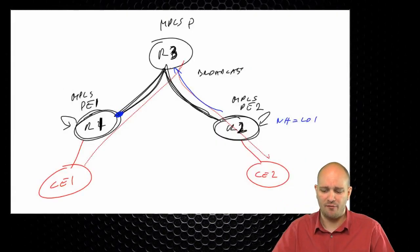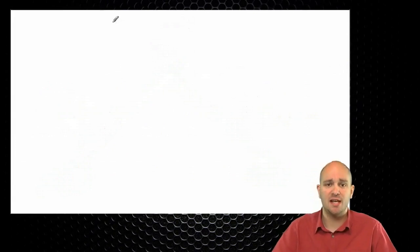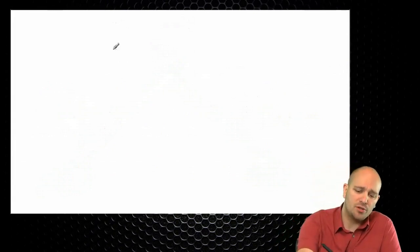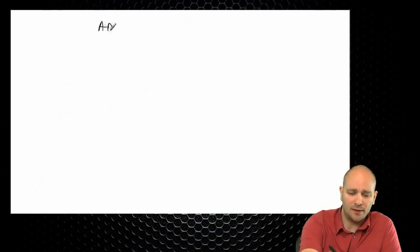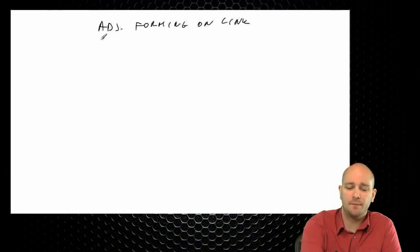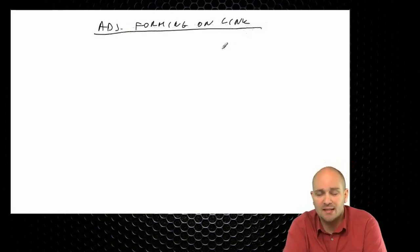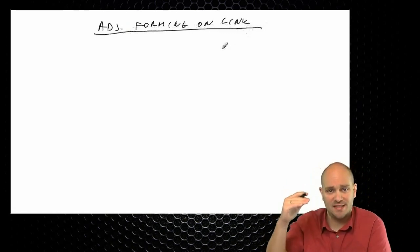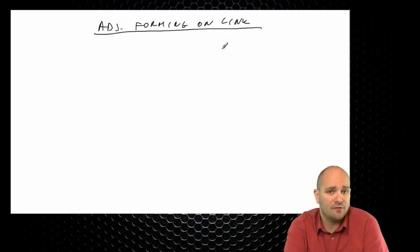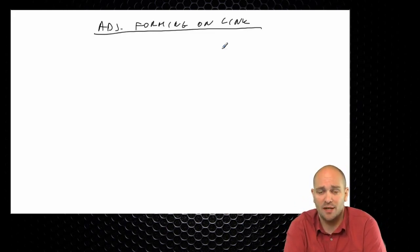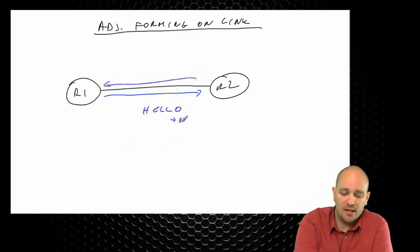One of the important things about OSPF is adjacency forming on the link. When that happens, there is a certain interface state machine maintained locally by the router, and the interface goes through different states before the adjacency is fully formed. The information is exchanged during adjacency forming, and only after it's fully formed can we calculate the best path, using Dijkstra's algorithm or shortest path first algorithm.